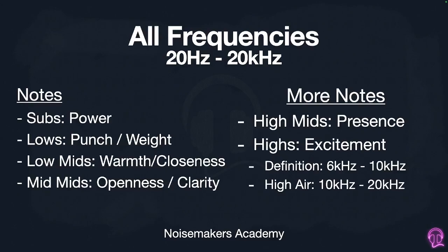To sum it all up: our subs are going to be power; our lows are going to be the punch or the weight of the mix; the low mids are going to be warmth or closeness; the mid mids are going to be openness or clarity; the high mids are going to be presence; and the highs overall are just going to add excitement — whether that's definition from 6 to 10k or high air from 10 to 20k.